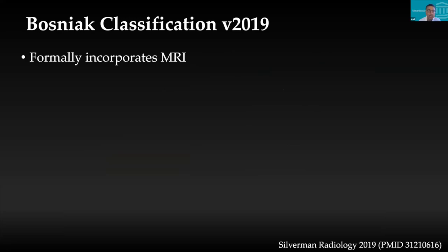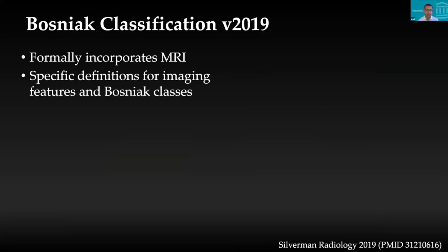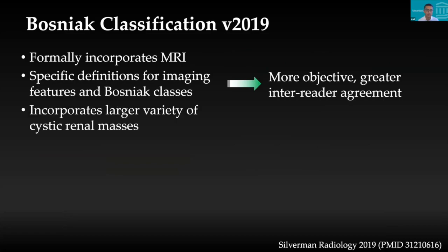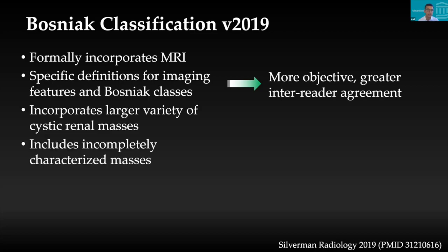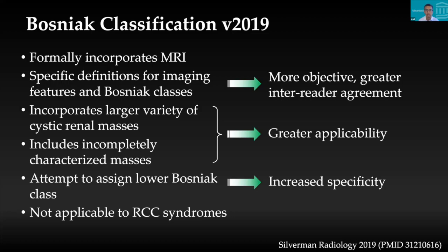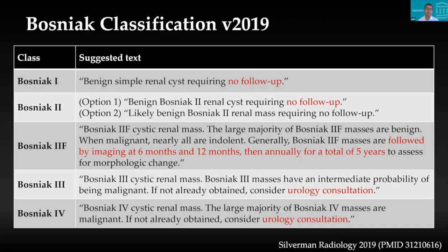What is Bosniak version 2019 and why do we need it? It formally incorporates MRI, has specific definitions for various imaging features and Bosniak classes to improve objectivity and inter-reader agreement, and incorporates a larger variety of cystic renal masses including incompletely characterised masses for greater applicability. It attempts to assign a lower Bosniak class — what would previously have been a Bosniak III lesion may now be pushed down to 2F. As an important reminder, this is not applicable to RCC syndromes.